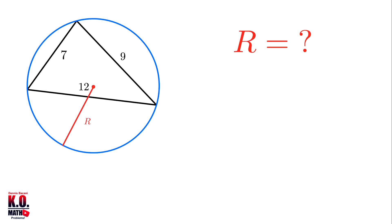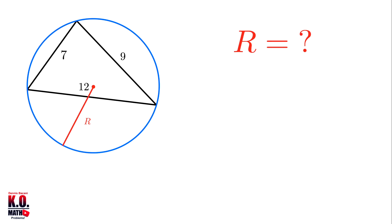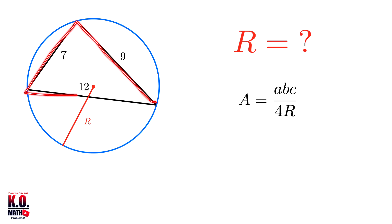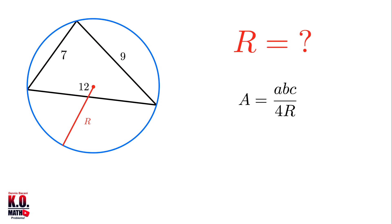Let's now move to our last problem. We're given a triangle with known sides and we want to find the radius of the circumscribed circle, also called the circumcircle. The circumradius r can be found using the formula: area A equals (a times b times c) all over (4 times r), where a, b, and c are the sides of the triangle. Rearranging, r equals (a times b times c) over (4 times A).